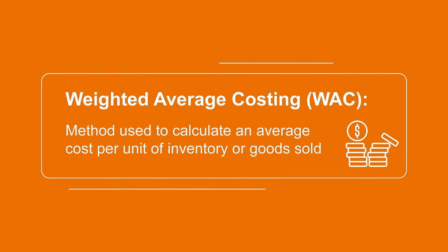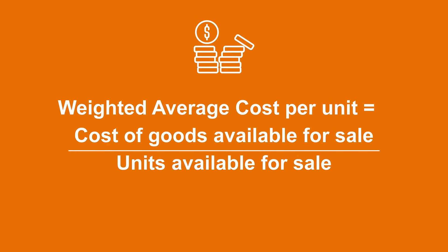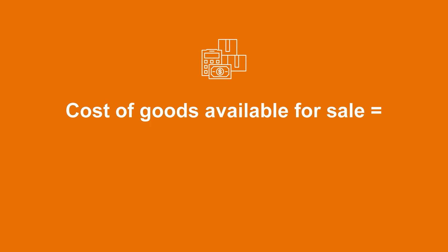Weighted average costing is a valuation method that assists companies in the process of assigning values to their cost of goods sold and inventory. Instead of specifically identifying the amount paid for each piece of inventory that's sold, companies can use this method to calculate an average of the overall value of their inventory. The formula for the weighted average cost method is as follows: weighted average cost per unit equals cost of goods available for sale divided by units available for sale.